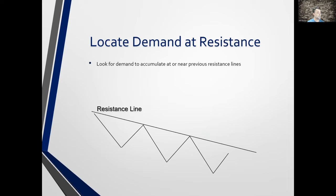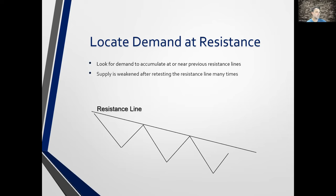We want to locate demand at resistance — note that here we're talking about a resistance line, not a resistance level. For time's sake, think of the resistance level and the resistance line as two in the same. Ultimately resistance is resistance — it doesn't matter if it's from a trend line, Fibonacci ratio, moving averages, overbought/oversold indicators. For what we're covering here, we want to focus on two types of resistance: one being the level, two being the line.